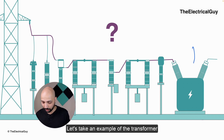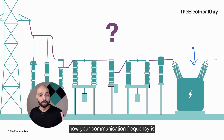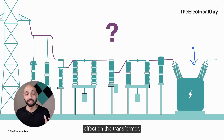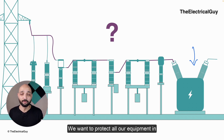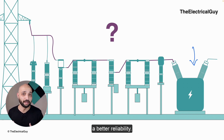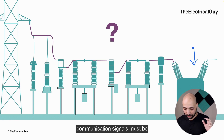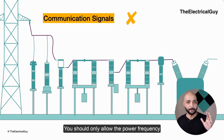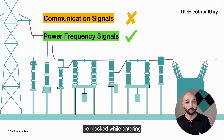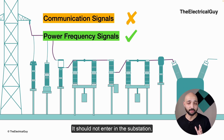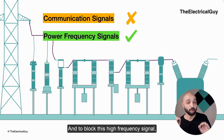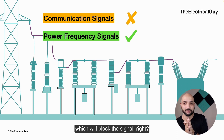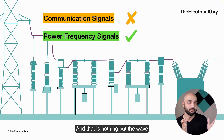This will definitely have some adverse effect. For example, if your transformer is designed for 50 hertz and the communication frequency entering is 200 kilohertz, it will have an adverse effect on the transformer. We want to protect all equipment in the substation for better reliability, and that is why communication signals must be blocked at any cost. Only power frequency signals should be allowed; communication signals must be blocked from entering the substation.